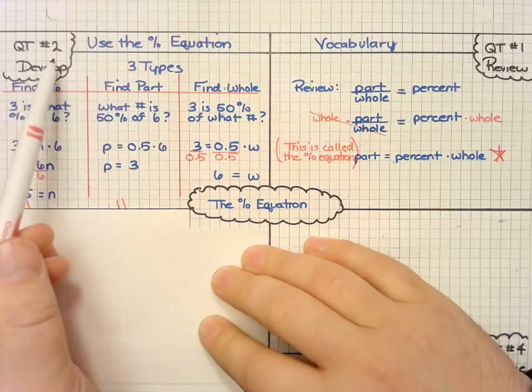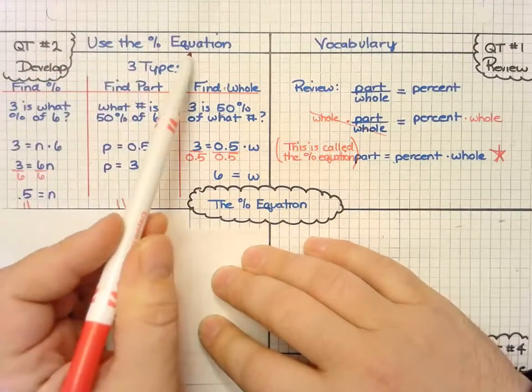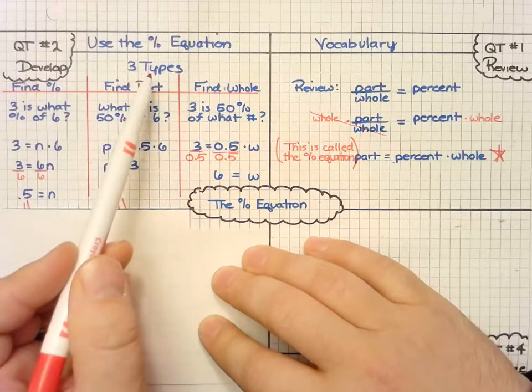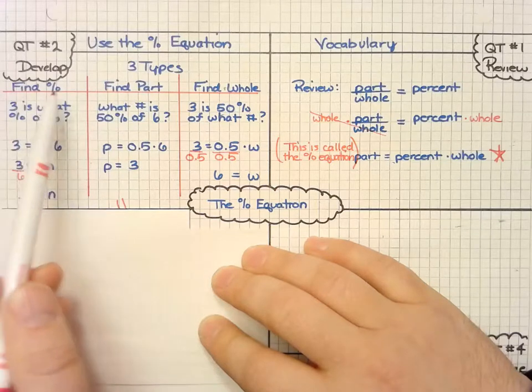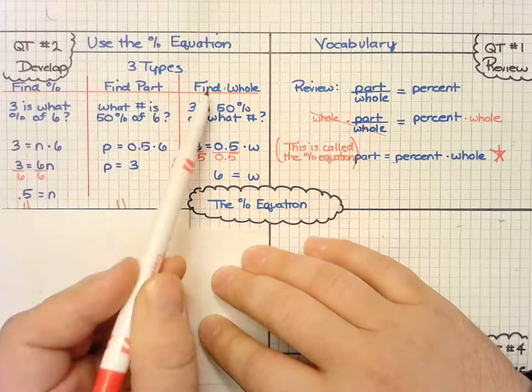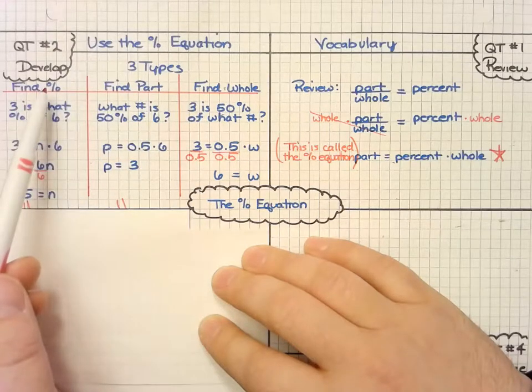For quick tip number two, we want to use that percent equation using the three types that we talked about yesterday. So again, we can find the percentage, we can find the part, or we can find the whole, all of which we use different variables to represent those unknowns.